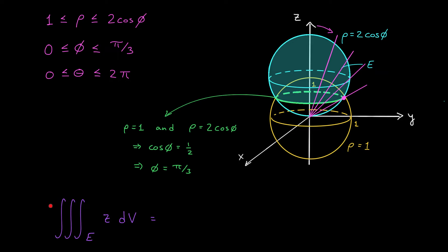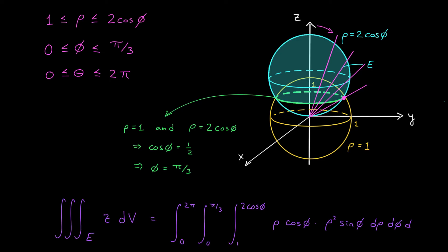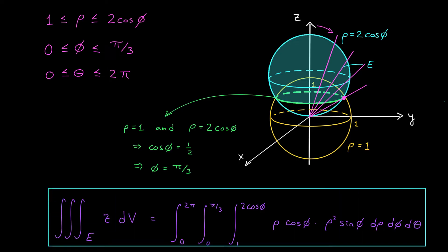We're finally ready to set up our integral. In spherical coordinates: theta goes from 0 to 2pi, phi goes from 0 to pi over 3, and rho goes from 1 to 2 cos phi. We convert the integrand z into spherical coordinates as rho cos phi, and multiply by our Jacobian rho squared sin phi d rho d phi d theta. And there you have it — let's move on to part B.